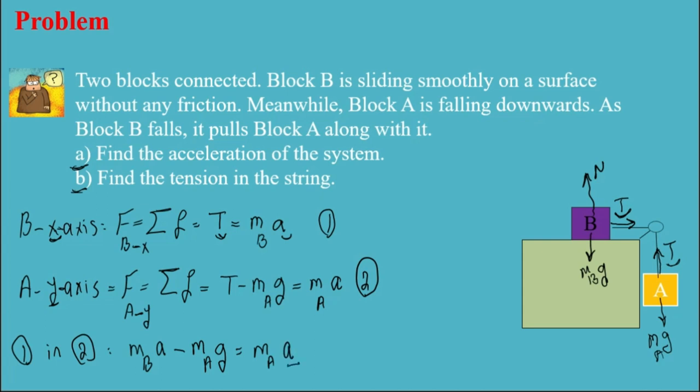Now I can find a from here. So factoring, it's m_B minus m_A times a equals m_A g.